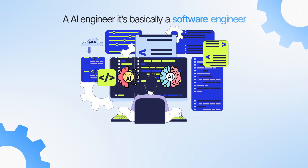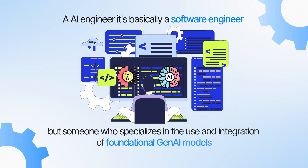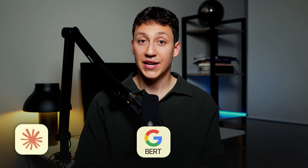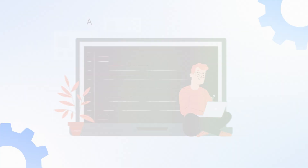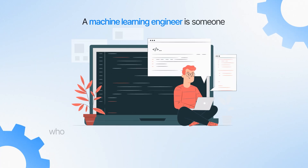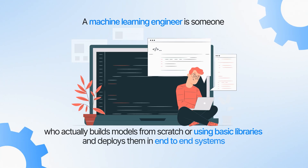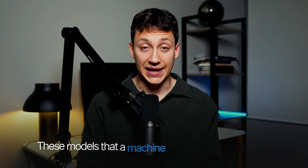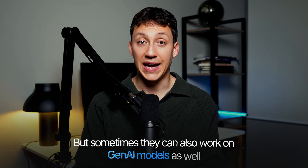In a nutshell, an AI engineer is basically a software engineer who specializes in the use and integration of foundational GenAI models like Claude, BERT, and the GPT model series. They don't build these models directly from scratch, but rather use them to serve a certain purpose. On the other hand, a machine learning engineer actually builds models from scratch or using basic libraries and deploys them in end-to-end systems. These models are mainly more traditional ones like gradient boosted trees or neural networks, though ML engineers can also work on GenAI models as well.